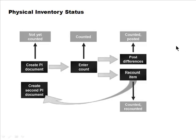The physical inventory process flow: when the document is created, its status is 'not yet counted.' Someone takes the document, does the counting, returns, and enters the count — status becomes 'count entered.' From there, if counts look good, differences are posted and status becomes 'counted posted.' Alternatively, if a count is suspected incorrect, a recount is requested, another PI document is created, and the process repeats.